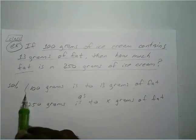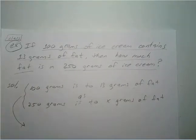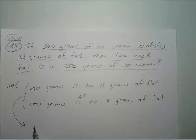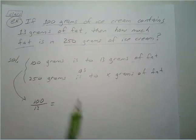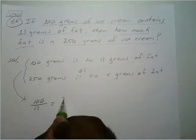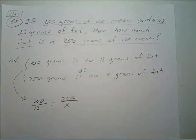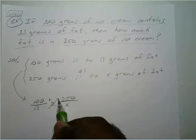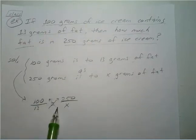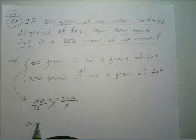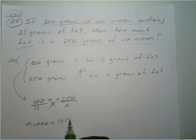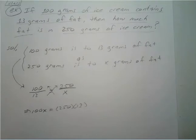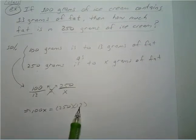We're going to create our proportion: 100 grams is to 13 grams of fat as 250 is to X. Now we go ahead and cross multiply. You have 100 times X equals 13 times 250. And 250 times 13 is 3,250.